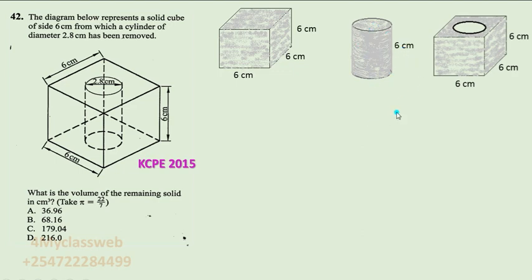So from the question, what was the volume of the remaining solid in cm cube? Now if you look at the solid before it was drilled a hole, it was complete.